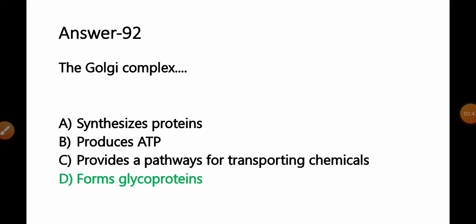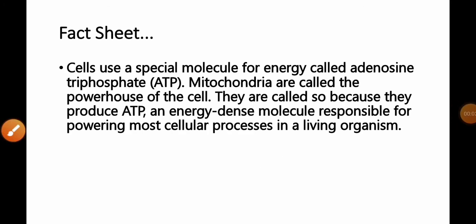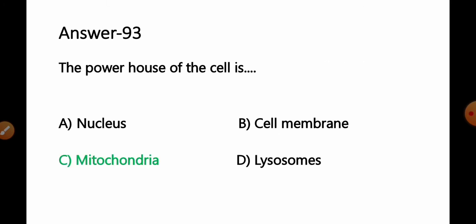Question 93: The powerhouse of the cell is: A) nucleus, B) cell membrane, C) mitochondria, D) lysosome. Fact: The cell uses a typical molecule for energy called adenosine triphosphate, ATP. Mitochondria are called the powerhouse of the cell because they produce ATP, an energy-dense molecule responsible for powering most cellular processes in living organisms. Option C, mitochondria, is the correct answer.